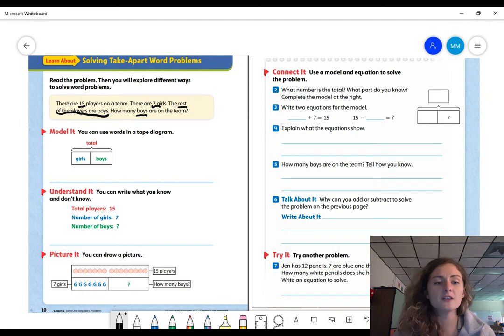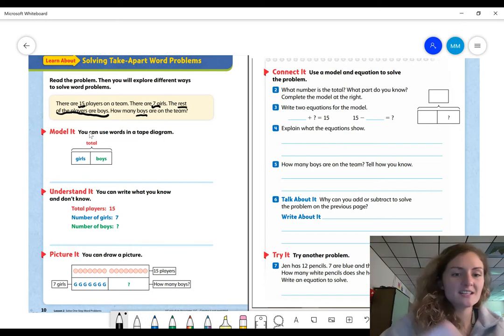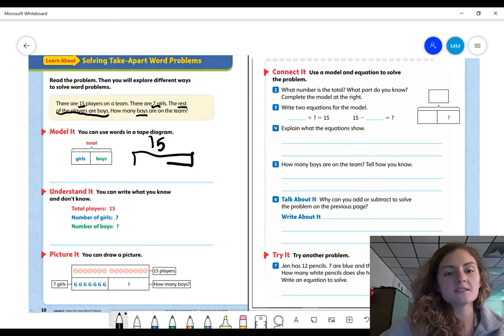So the first way that we can show it is to create a model. So remember we talked about this model yesterday. It's kind of like a number bond in the sense that we have our whole on the top and our parts beneath it. So let's think about our story. I'm going to read it again. It says there are 15 players on a team. How many players total? 15. So I'm going to go ahead and write 15.